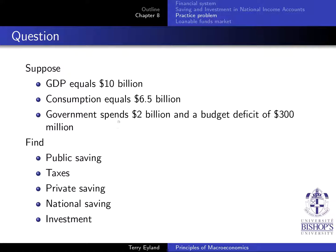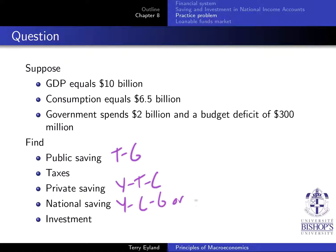What is public saving? Public saving is always going to be T minus government spending. What is taxes? We'll have to figure it out — it's our T. What is private saving? It's income minus taxes paid minus consumption. What is national saving? It's income minus what's spent by consumers minus what's spent by government. Or we could see it as public plus private saving — those two added up. It's the same thing.